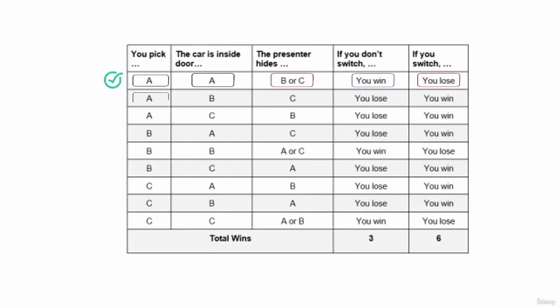The next option is picking door A and the car being inside door B. The presenter will hide door C. You will win if you switch. And now our scenarios are tight, one victory for not switching and one victory for switching.